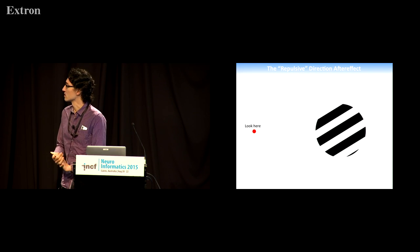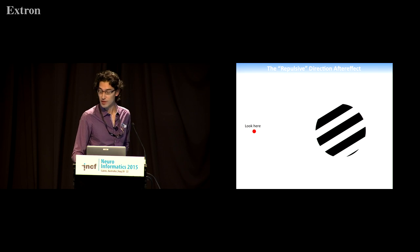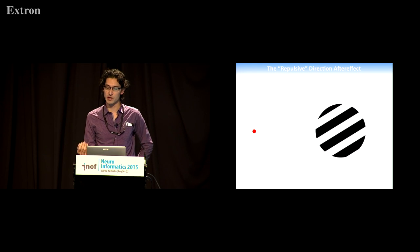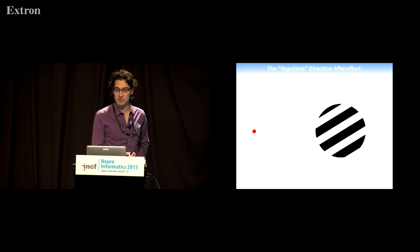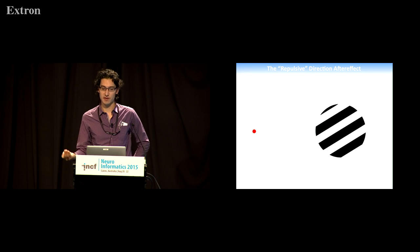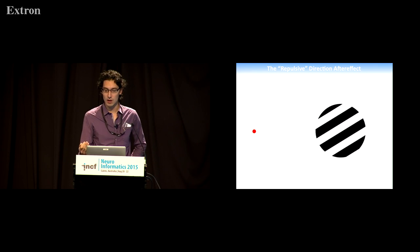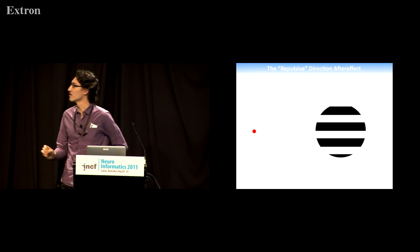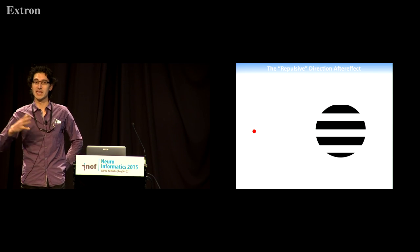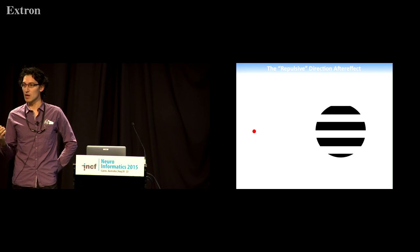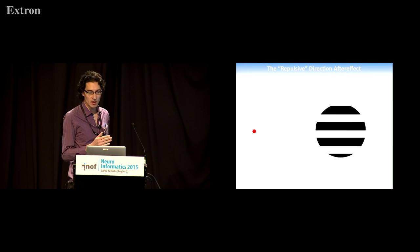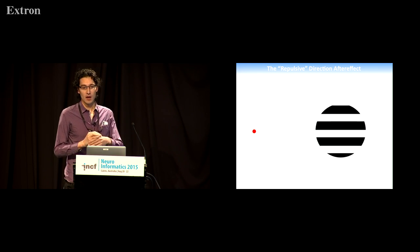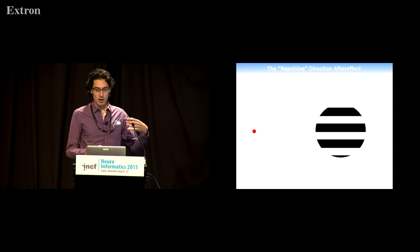Rather than show you perceptual data, I thought I'd give you an example. If you look at the red dot there and keep your eyes fixed on it, I'm essentially adapting you to motion up and to the left. In a moment I'm going to change the stimulus. Keep looking at that red dot and judge the direction of the new stimulus. It'll be close to vertical; I want you to tell me whether it's left or right of vertical. Hopefully, if I set this up correctly, most of you perceived it initially as moving slightly to the right, and it very rapidly would have moved back to appearing vertical. Did people get that? Yeah, okay, so it should be a pretty powerful effect.